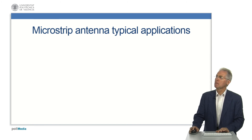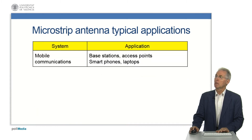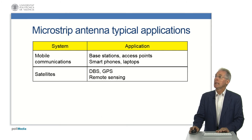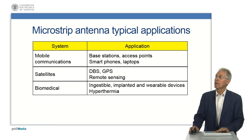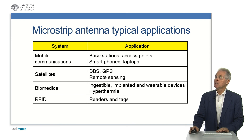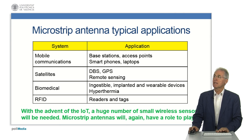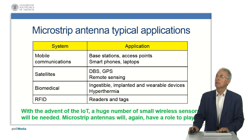Microstrip antennas are used in many applications across different systems. In mobile communication systems, they are used in base stations, access points, and mobile terminals such as smartphones and laptops. In satellite systems, they are used in DBS and GPS, as well as in remote sensing. In biomedical systems, they are used in ingestible, implanted, and wearable devices, as well as in hyperthermia. In RFID systems, they are used both in the reader and as tags. With the advent of the Internet of Things, a huge number of small wireless sensors will be needed, and microstrip antennas will again have a role to play.